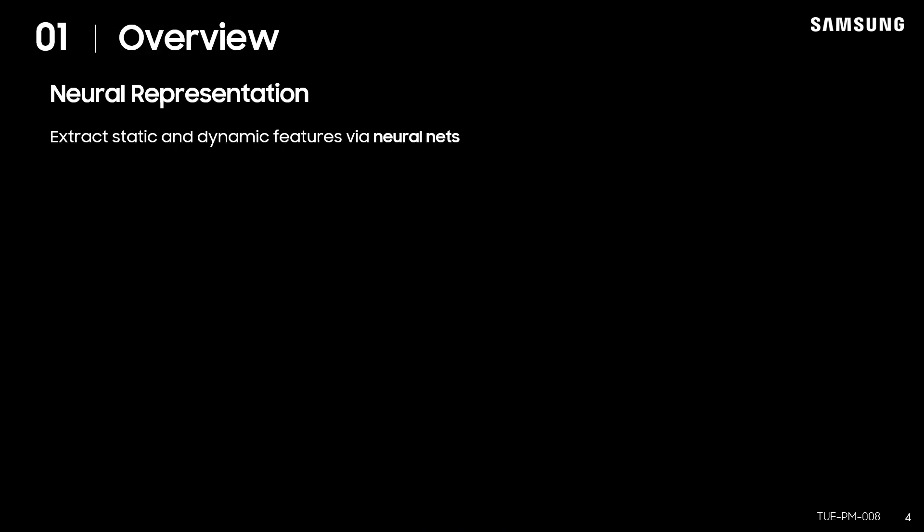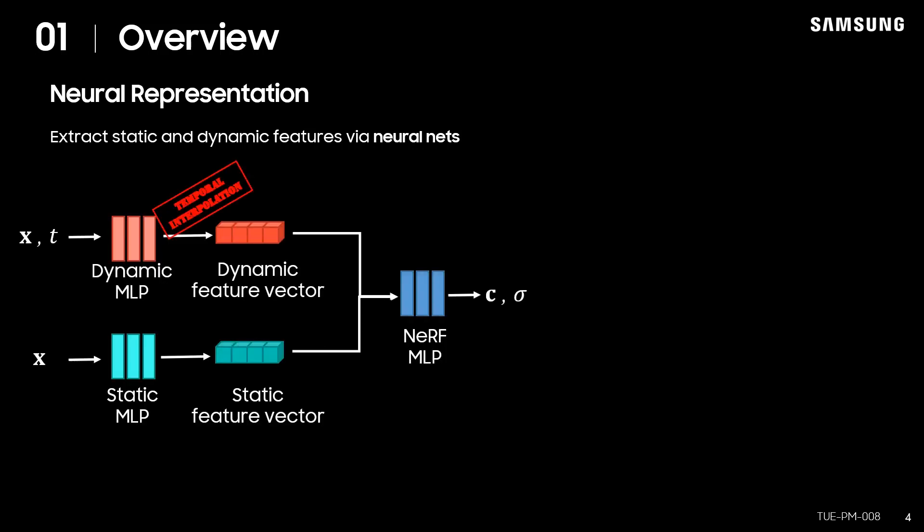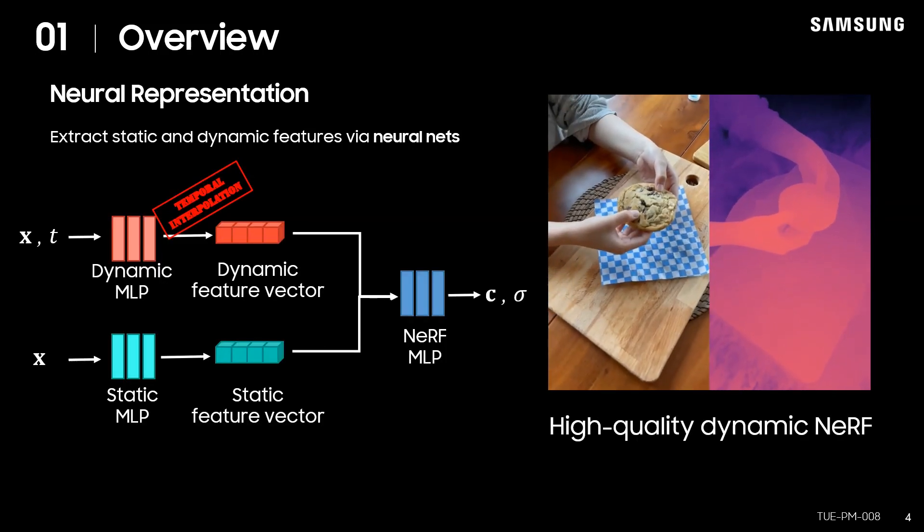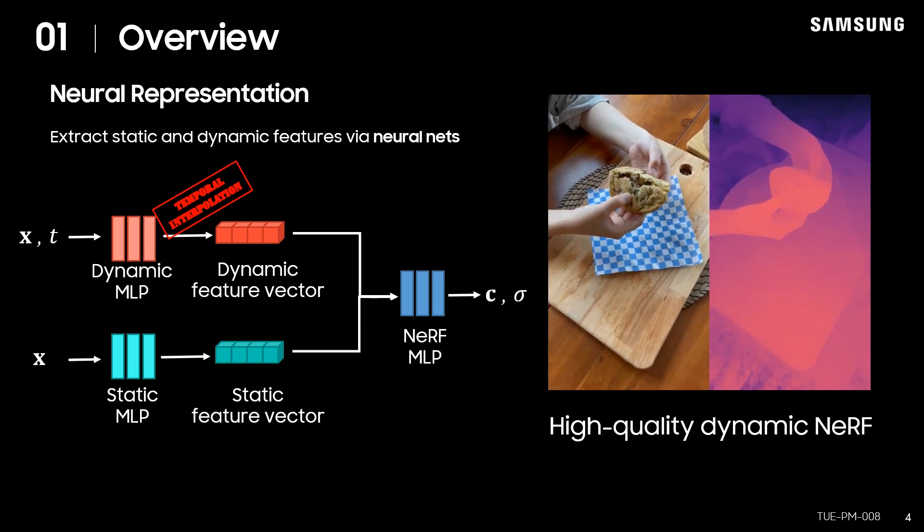In the neural representation, the static and dynamic feature vectors are extracted using multilayer perceptrons, which enables high-quality dynamic NeRF with compact models.